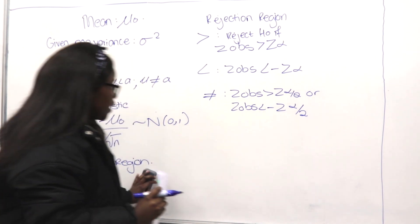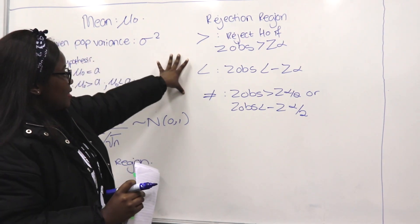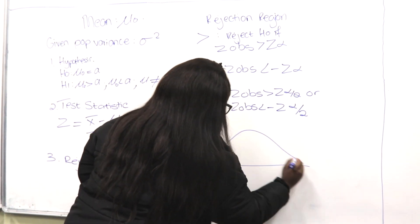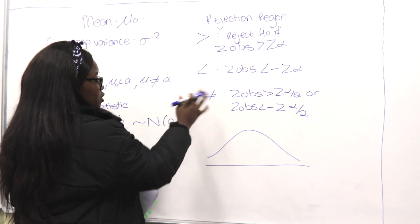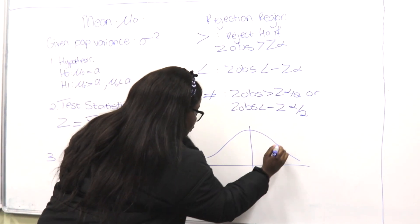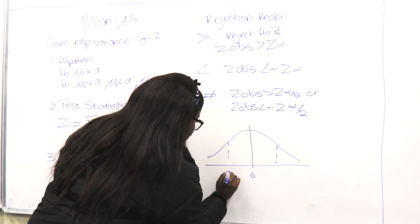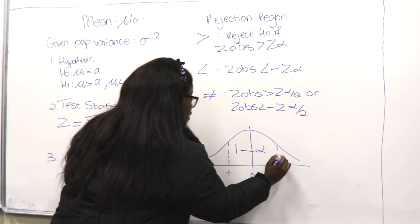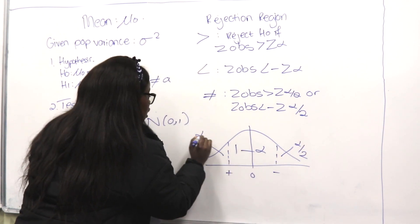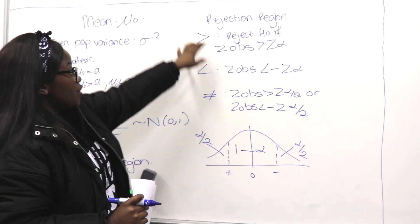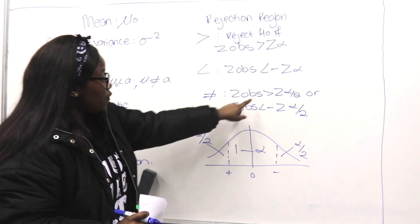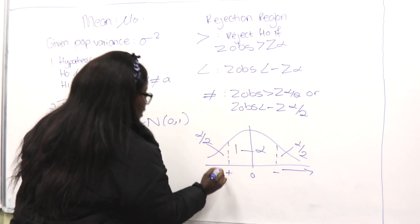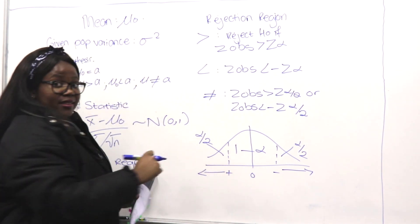The z distribution is symmetrical. For the two-tailed case, if zero is the center, the middle region is 1 minus alpha, and each tail is alpha over 2. That's why we reject H-naught if z observed is greater than z alpha-over-2 or less than negative z alpha-over-2.